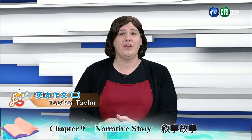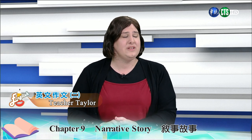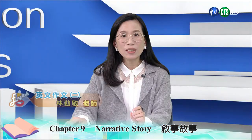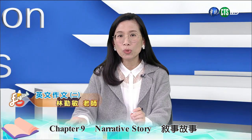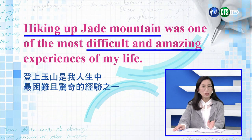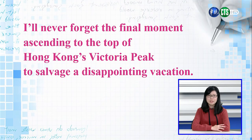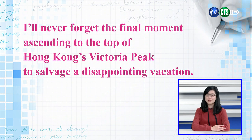Exactly. And this feeling is the controlling idea, and everything in the narrative should relate back to one or both of these ideas. 是的,这篇里面的控制概念就是我们的叙述文中所有的内容都应该跟这个有关系。比如说要跟hiking up Jade Mountain有关,或者是跟difficult and amazing有关,一定要跟这两个东西的其中一个有关系的。然后Laura同学请朗读一下我们的下一个范例。 I'll never forget the final moment ascending to the top of Hong Kong's Victoria Peak to salvage a disappointing vacation. 这句是说我永远不会忘记,因为登上香港太平山顶的最后时刻,挽救了令人失望的假期。